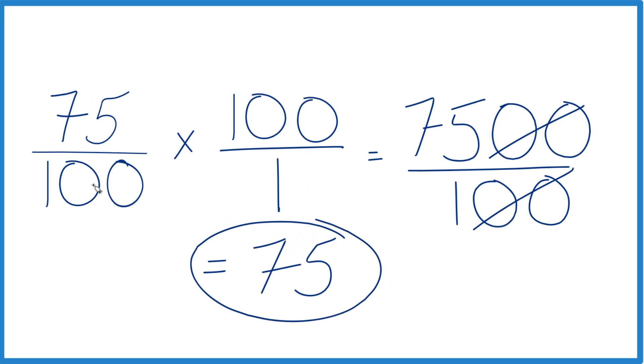You could also convert this to a decimal: 75 divided by 100 is 0.75. Then multiply that by 100, and you'll get 75, just like we did before.